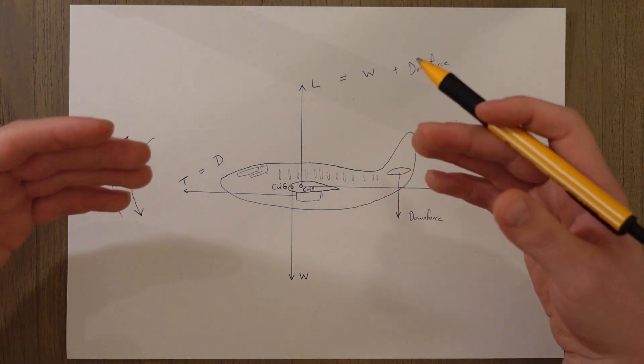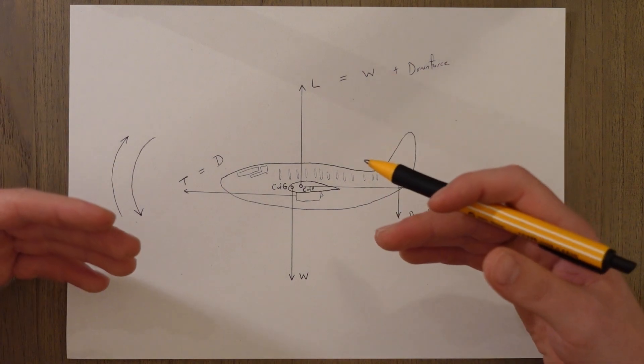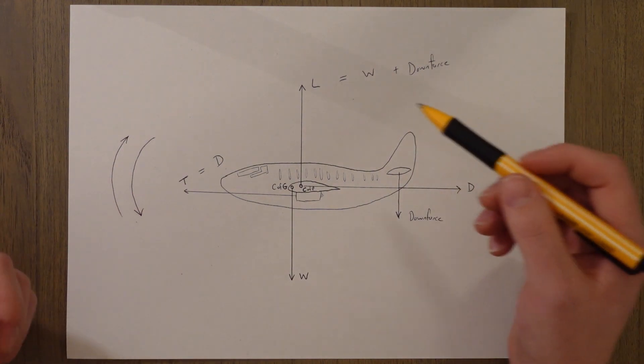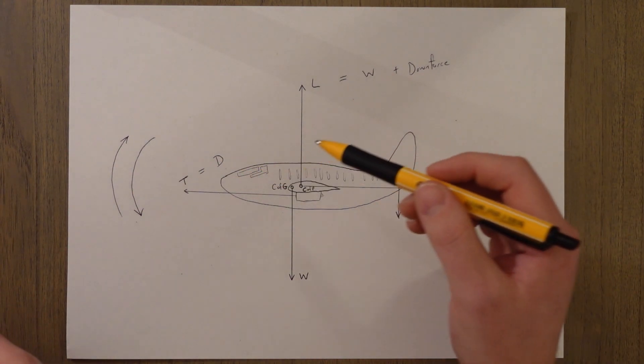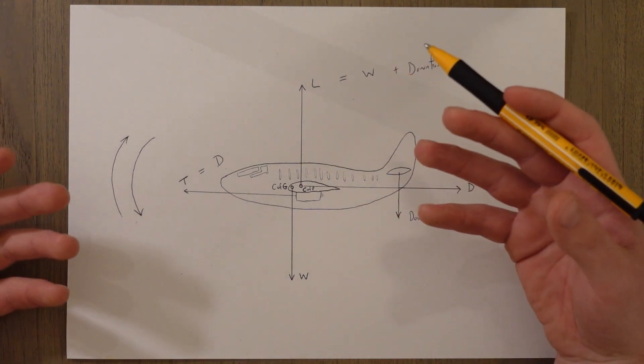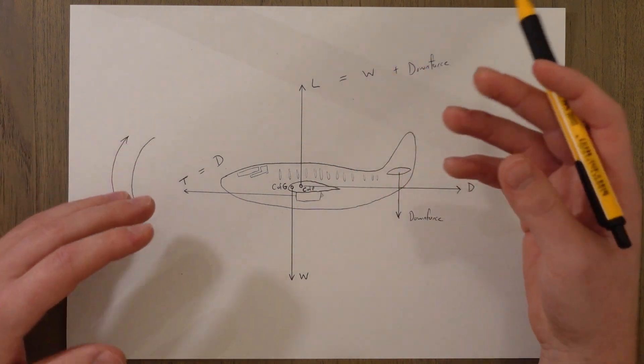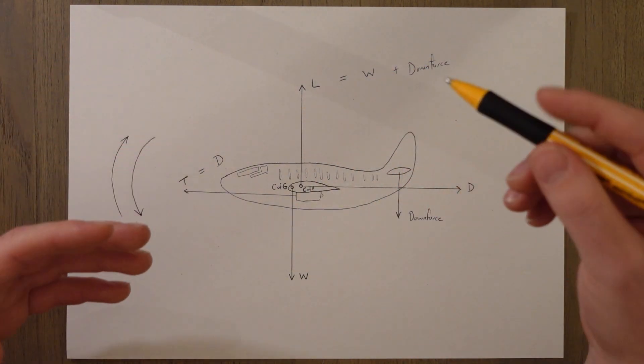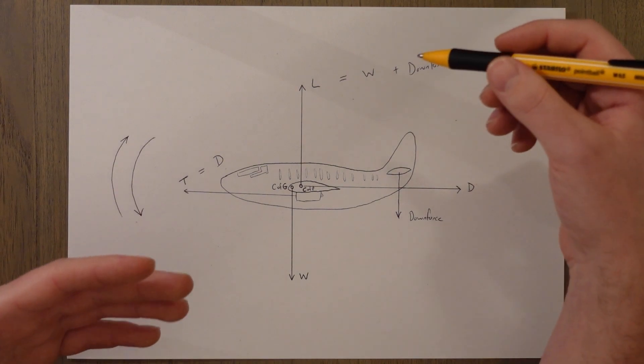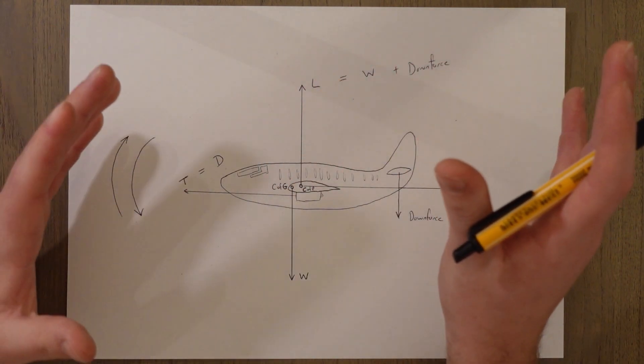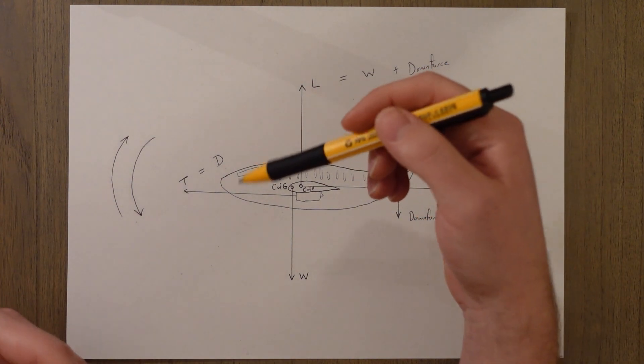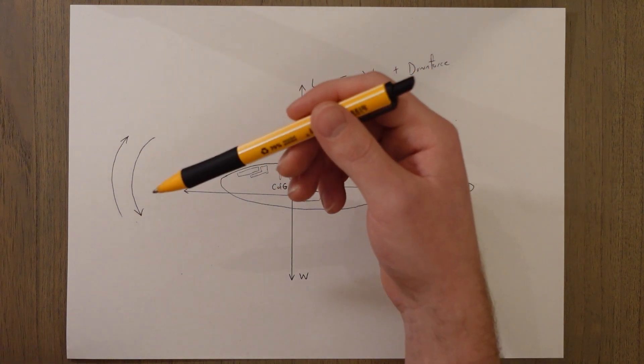Underslung engines reduce downforce required at the tail. So for steady level cruise flight we can say that lift equals weight plus downforce and thrust equals drag, and also the positive and negative moments must be balanced. I always say nose up is a positive moment and nose down is a negative moment.